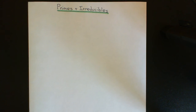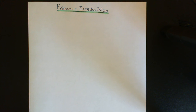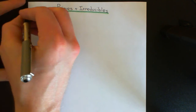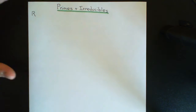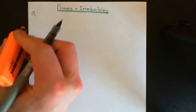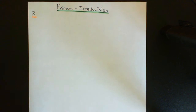Welcome to this next video in the playlist on ring theory. In this video, what we're going to discuss is the definition of a prime element and the definition of an irreducible element in a non-zero commutative ring. So we're going to be working in a non-zero commutative ring — not the zero ring — initially, as these definitions can be made in an arbitrary non-zero commutative ring.